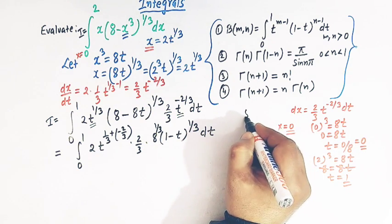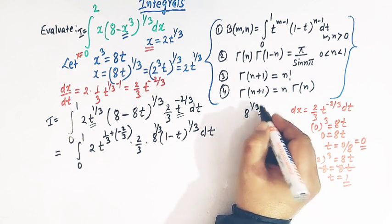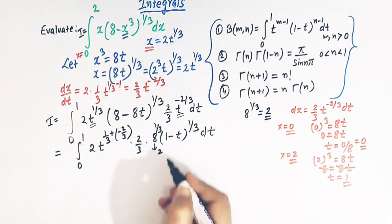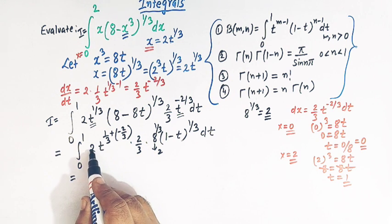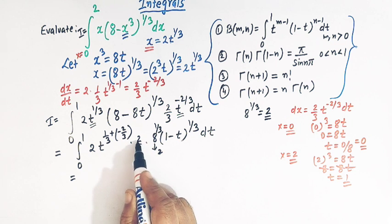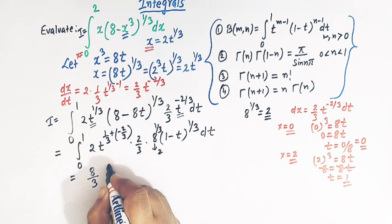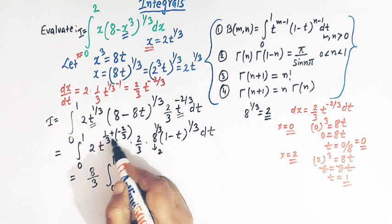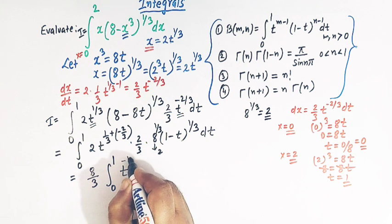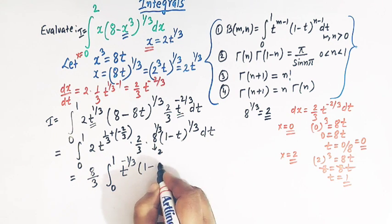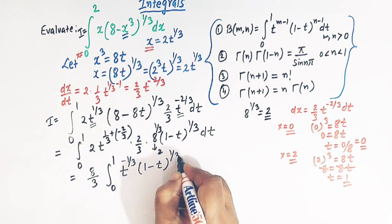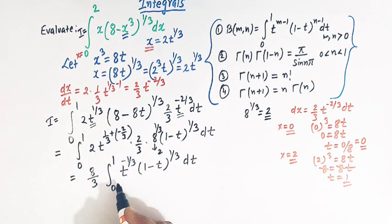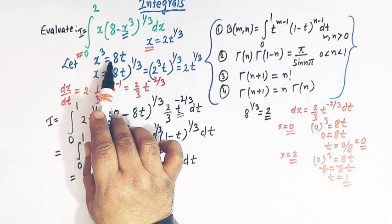Now 8 raised to 1/3 is the cube root of 8, which is 2. So we have 2 times 2 times 2/3, giving 8/3 outside the integral. This gives I equals (8/3) times the integral from 0 to 1 of t raised to minus 1/3 times (1 minus t) raised to 1/3 dt. So the integral has been reduced to this form by the substitution.